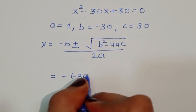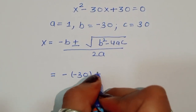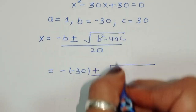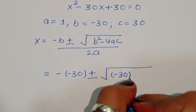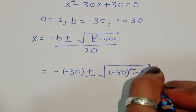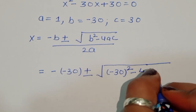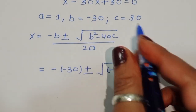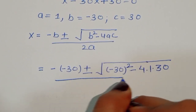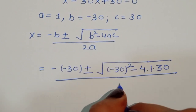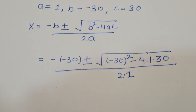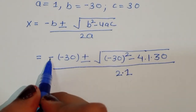Substituting the values: b is minus 30, so minus b is plus 30. We get x equals 30 plus or minus the square root of (minus 30) squared minus 4 times 1 times 30, all divided by 2 times 1.